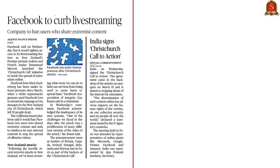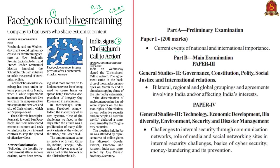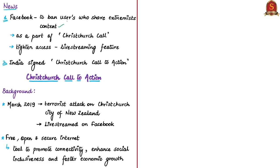We are going to analyze two articles which are on the same lines. The first article is 'Facebook to Curb Live Streaming' and the next article is 'India Signs Christchurch Call to Action.' This article appears on page number 12 in all the four editions. The discussion is relevant in your prelims preparation under current events of international importance, and can be linked to General Studies Paper 2 under global groupings and agreements involving India and General Studies Paper 3 under challenges to internal security. The first article discusses Facebook's decision on banning users who shared extremist content.